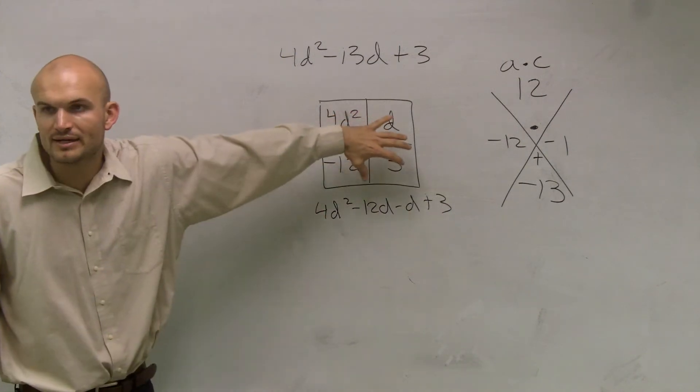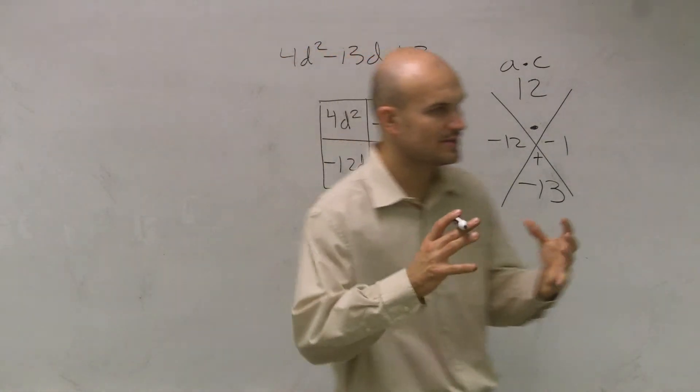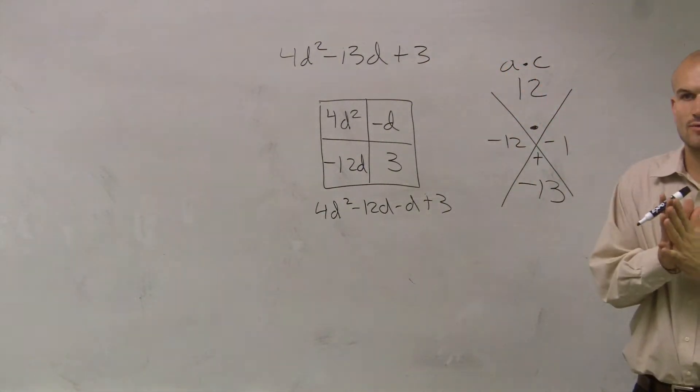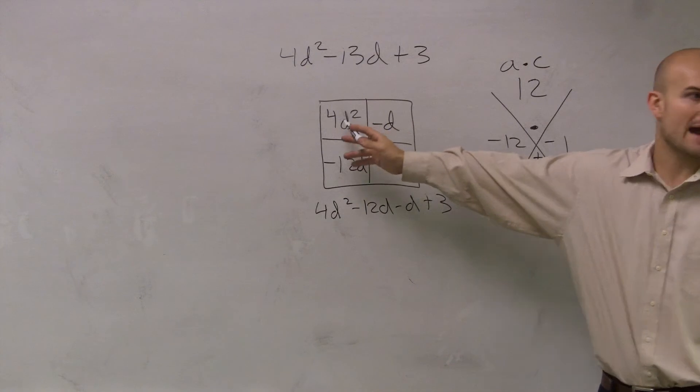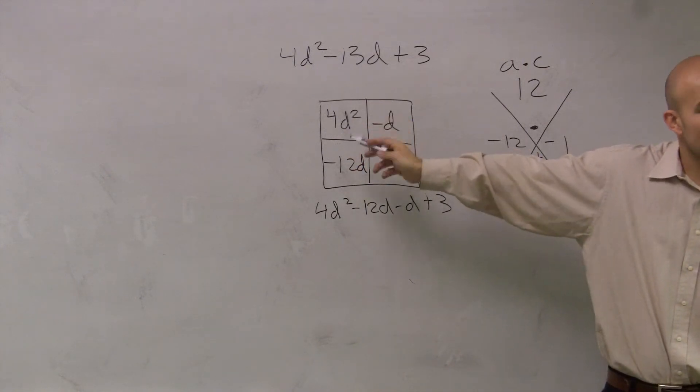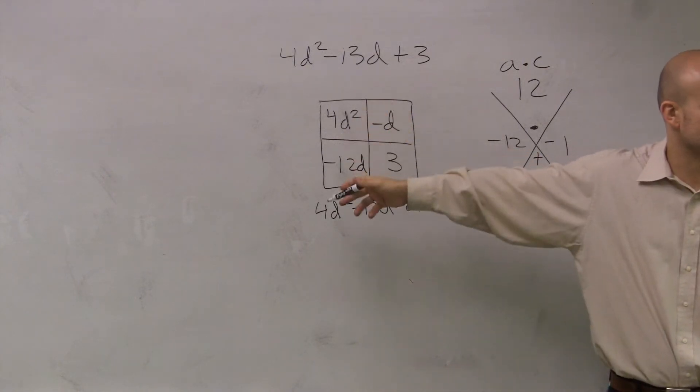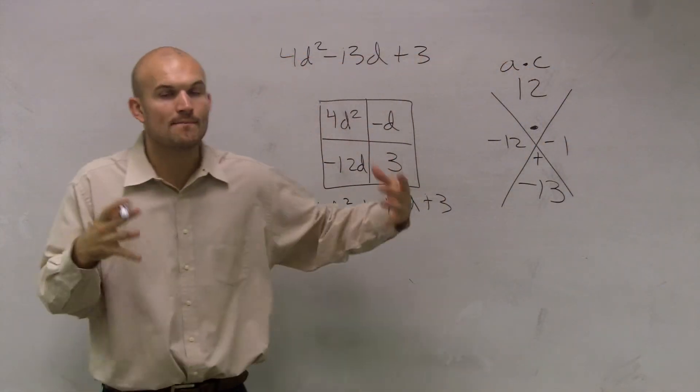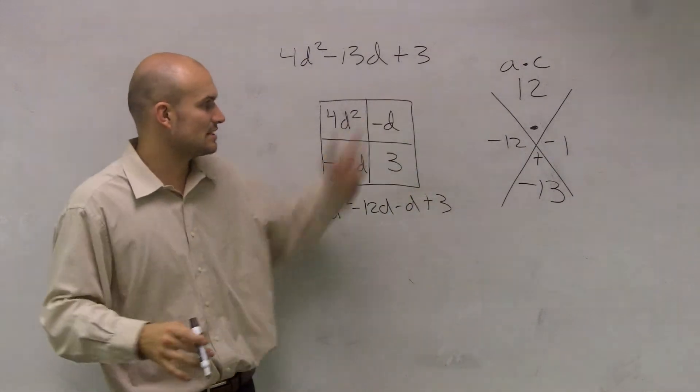So why do we want to make it as the box? Well, what we can do is, since we know the area is contained in our rectangle, what we can do is we can now factor out each area. We can factor out each area to find the width. And once we find the width, we know what multiplies by what to give us our answer.